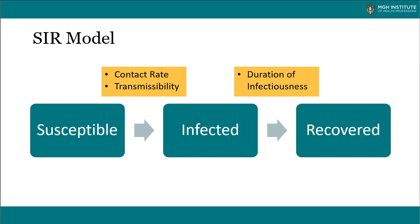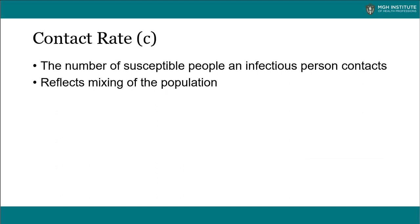Movement between the compartments is a function of contact rate and transmissibility — that is, from susceptible to infected, which really means infectious — and the duration of infectiousness, which determines movement from infected to recovered. Contact rate is probably the most important of these because it's the one that's under the greatest control. It's the number of susceptible people an infectious person contacts, and it reflects the mixing of the population.